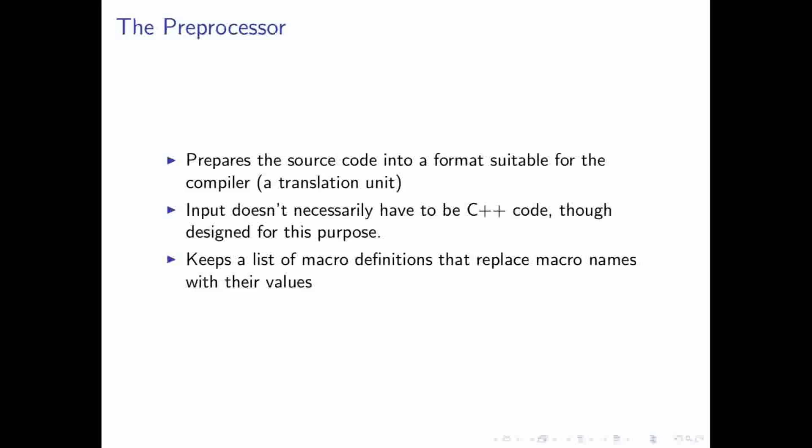So, let's talk a little bit about the preprocessor, which you might recall is the first step in our actual compiling phase. And what the preprocessor does is it actually takes your source code and it actually creates a version of it that's usable to the C++ compiler. And this is usually called a translation unit. As we'll see, it's a little bit different than the actual source file itself.